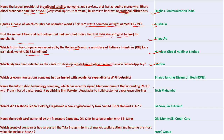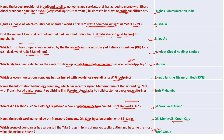London was selected as a center to develop WhatsApp mobile payment services. BSNL partnered with Google for expanding its Wi-Fi footprint. Tech Mahindra signed an MOU with France-based digital content publishing firm Rakuten Kobo to build a customer experience offering. Geneva, Switzerland is the place where Facebook registered its new cryptocurrency entity Libra Network Limited. Ola Money SBI Credit Card was launched by Ola in collaboration with SBI.